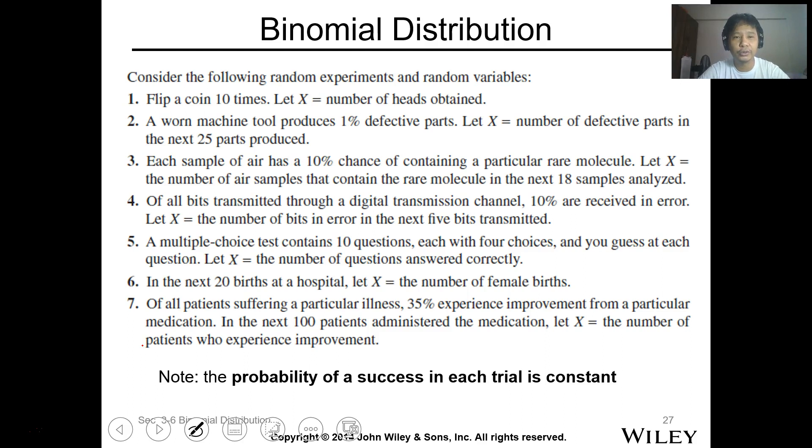Let's proceed with the binomial distribution. For binomial distribution, let's consider first the following random experiments and random variables. Number one, flip a coin 10 times. Let X be the number of heads obtained. When you flip the coin 10 times, the outcome is just head or tail. But the outcomes we're looking for is the number of X obtained, so it's possible 0 to 10.